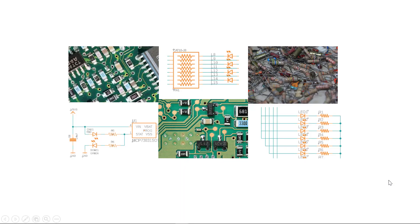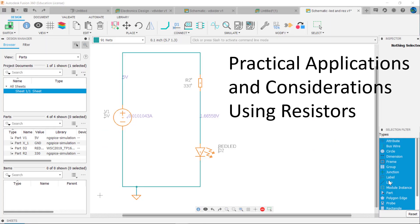Resistors are very common in electronic circuits. Have you ever wondered why they're used in a circuit? Maybe you're wondering how do you determine the value of a resistor needed in a circuit? Welcome to video 5 in our basic electronics using Fusion series: practical applications and considerations using resistors. In this video we'll explain how and why resistors are used in a circuit and how you determine the value of resistance you need.